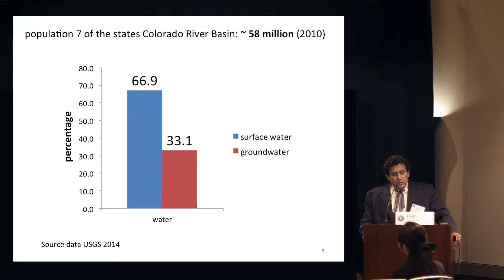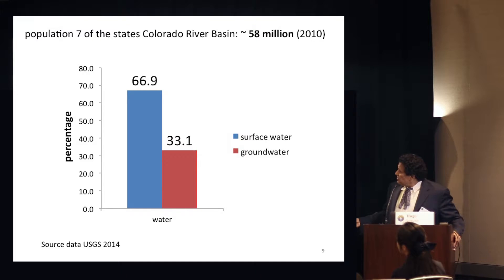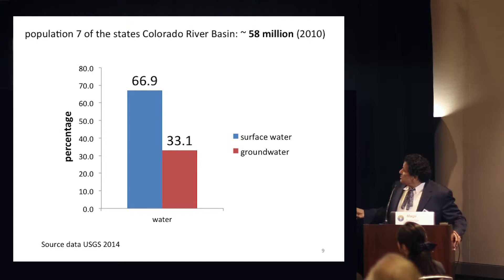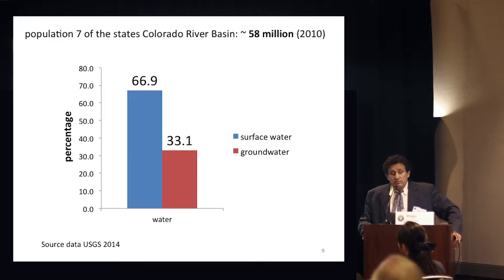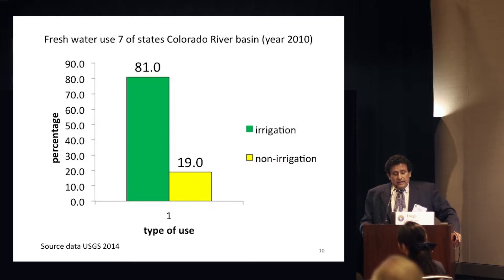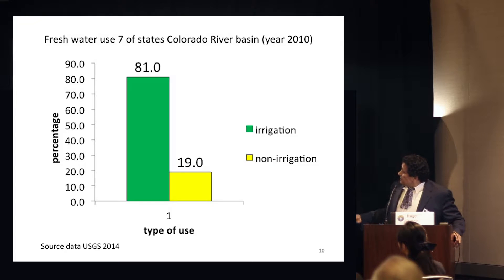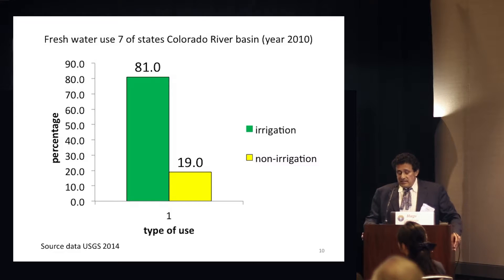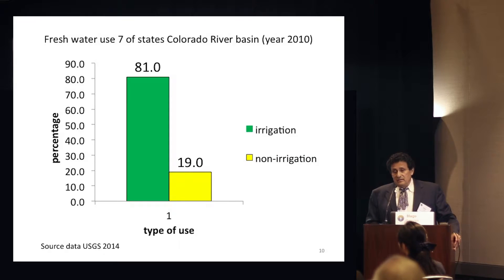A lot of my work has dealt with arid states, especially in the Colorado River Basin. In the average across the seven states, about 70% of developed water use is surface water and about 33% is groundwater. Looking at USGS data for those seven states, about 81% on average is devoted to irrigation and 19% to non-irrigation uses. So irrigation does matter in the water balance.